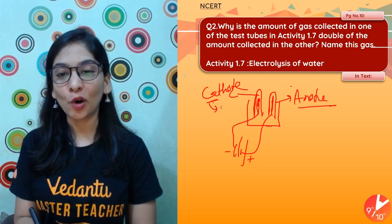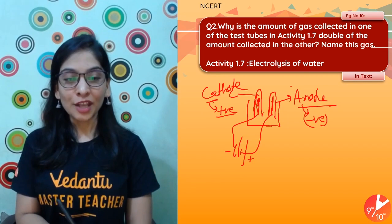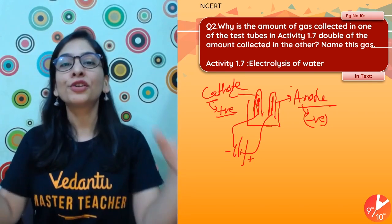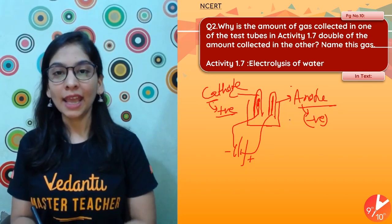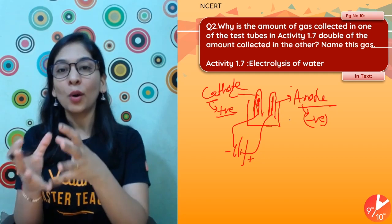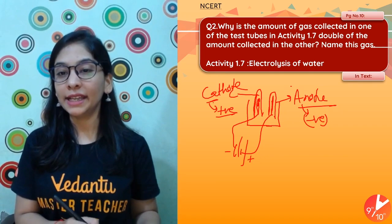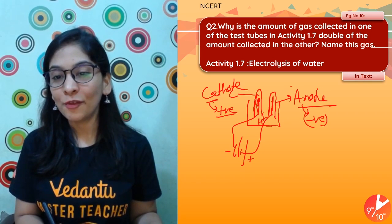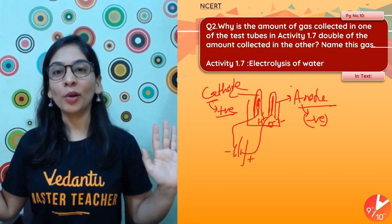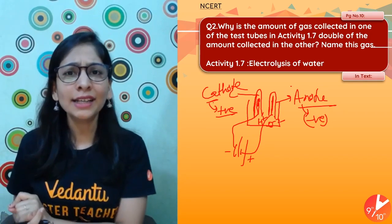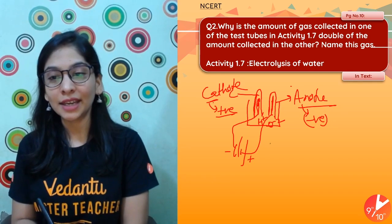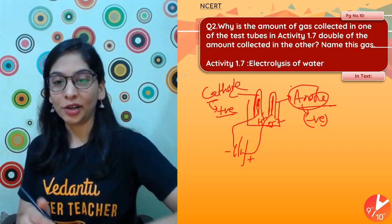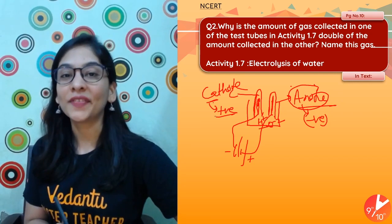The cathode attracts cations (positive ions) and the anode attracts anions (negative ions). Water has hydrogen and oxygen, but they are not free. So we add a few drops of acid to the water — the acid helps the ionization of water at a much faster rate. Once we add the acid drops to water, it dissociates into ions: hydrogen ions (H⁺) and oxide ions (O²⁻). When we switch on the electricity, H⁺ moves toward the negative terminal (cathode), and O²⁻ moves toward the positive terminal (anode).